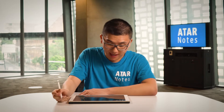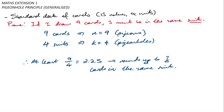I'll go through an example. Here I have a standard deck of cards — for those who don't know, there are 52 cards involving 13 values and four different suits. I'm going to do a simplistic example: if I draw nine cards, then three must be in the same suit.